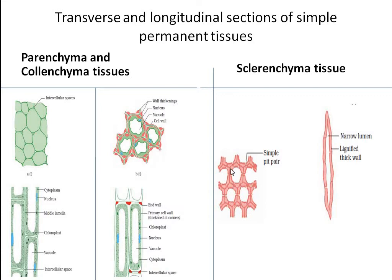And here in sclerenchyma, the thickening is all around the walls — not just the corners, but all around the cell it is thickened. When the cell is thickened all around, the content of the cell is completely gone, completely dried off. When the contents dry off, a small space called a lumen is produced. A narrow lumen is produced in the cell. So these cells are dead — the sclerenchyma cells are dead.